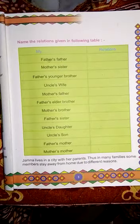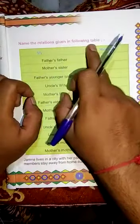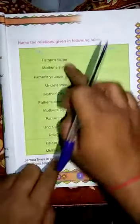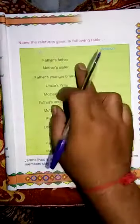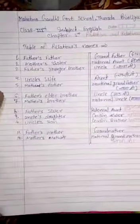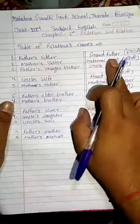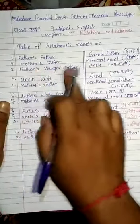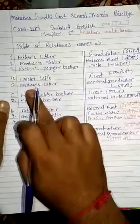Relations and Relatives. In the following table, name the relations given. In this table you will see the name — what do you say? Father's father, mother's sister — what do you say? Father's father, uncle's wife — aunt.